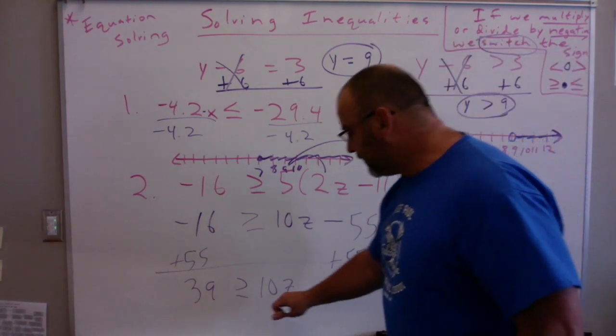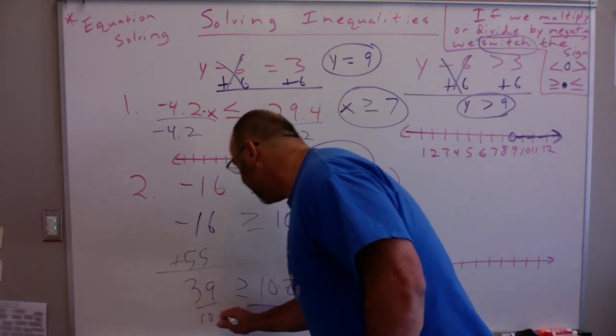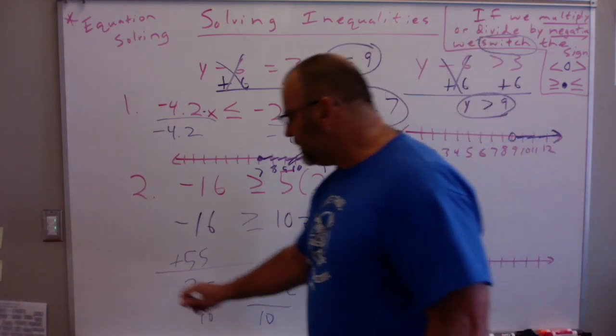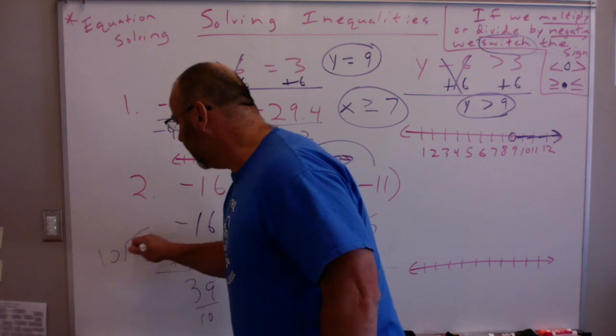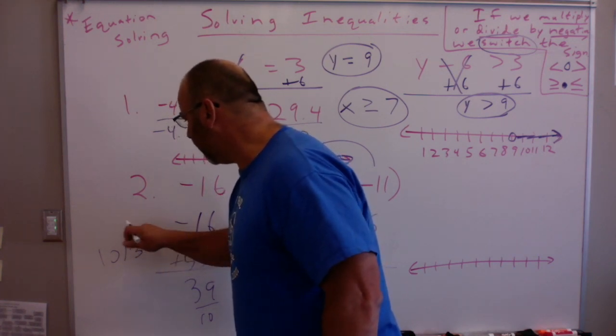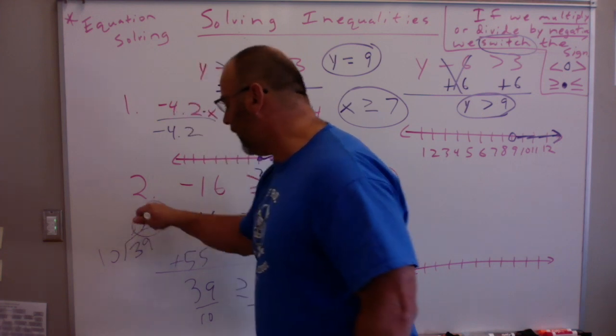Now, I'm going to divide both sides by 10. I'm multiplying by 10, the opposite is to divide by 10. And I get 39 divided by 10. If I divide that out, 10 goes into 39, that's going to end up being 3.9. If I divide that out.